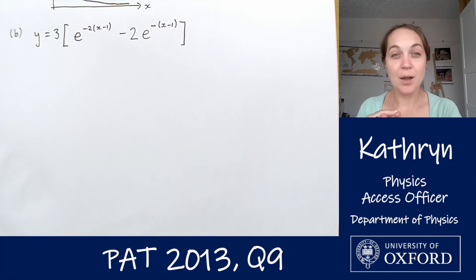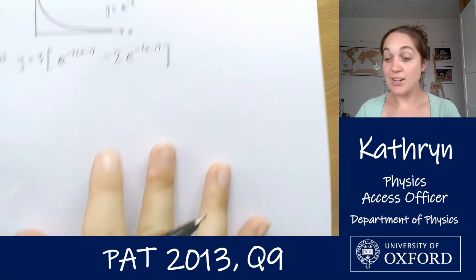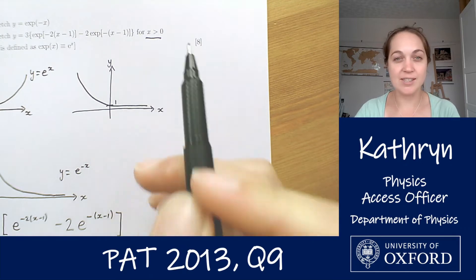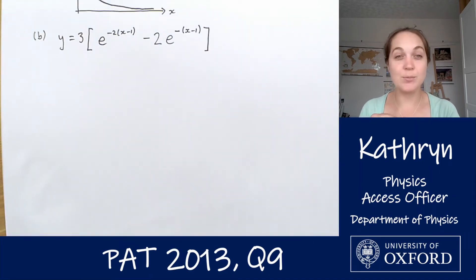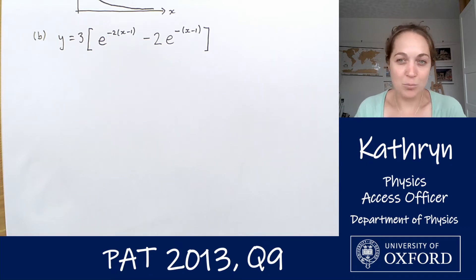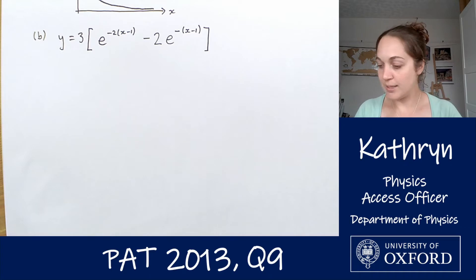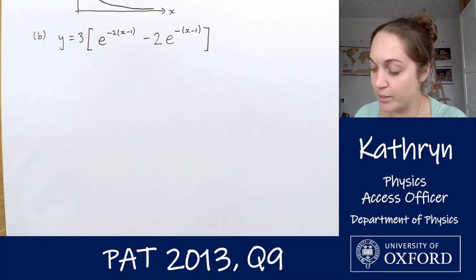There are a few things we can do to break it down. We can think about the limits — what happens when x gets really, really big? The question has asked us to think about it only for x greater than zero, so we won't worry about the negative limit. But finding what happens when x goes to infinity is one thing we can do. We can also find where it crosses the y-axis by putting x equals zero into this expression. And we can find turning points. If we put all of those things together, we can sketch what's going on. Let's start by substituting x equals zero.